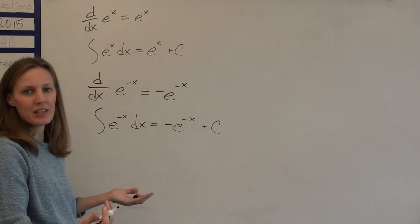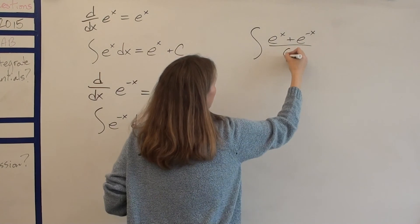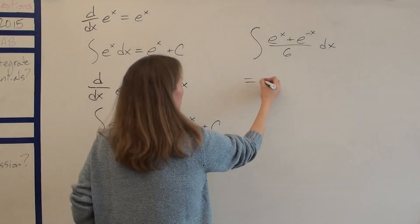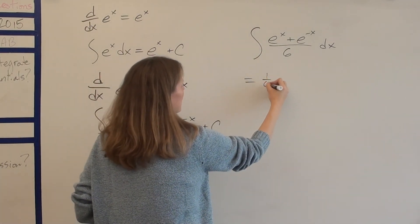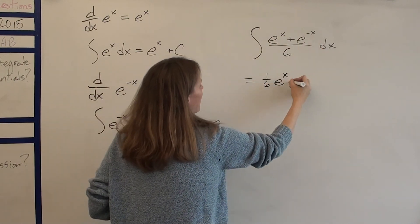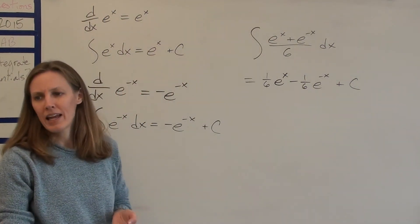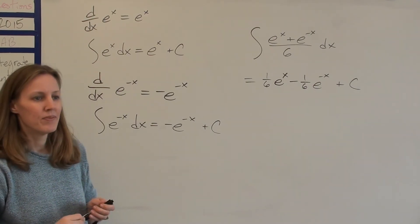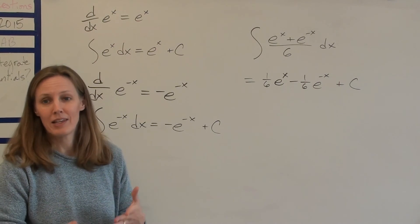In a lot of these problems you might see something like e to the x plus e to the negative x over 6. The over 6 is just a coefficient — pull it out. So this is one-sixth times whatever these antiderivatives are. The antiderivative of e to the x is e to the x, and the antiderivative of e to the negative x is negative e to the negative x. So you get one-sixth e to the x minus one-sixth e to the negative x plus c. Just know that integral — don't bother doing a u-substitution on e to the negative x.